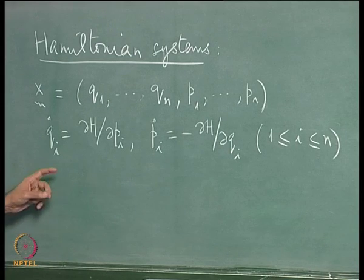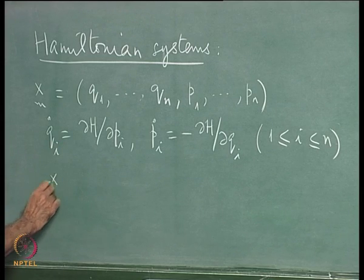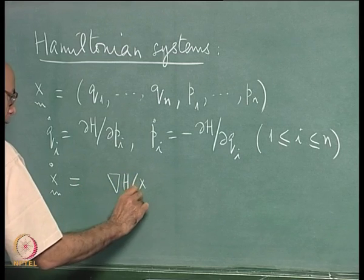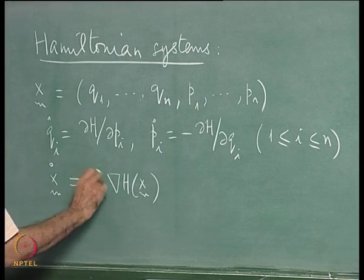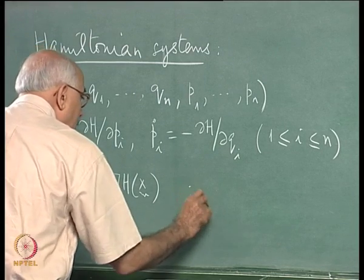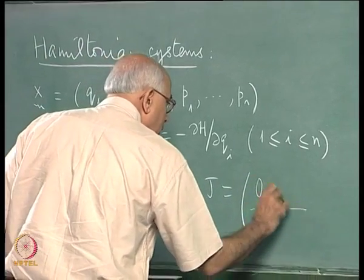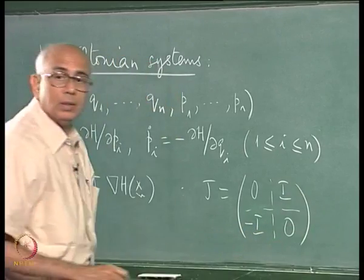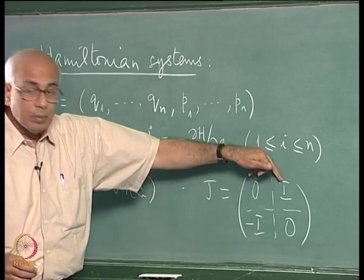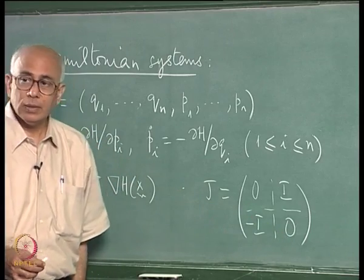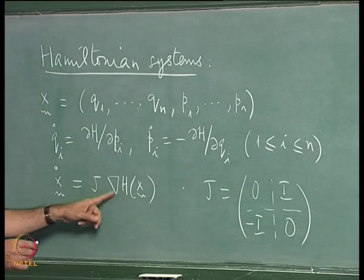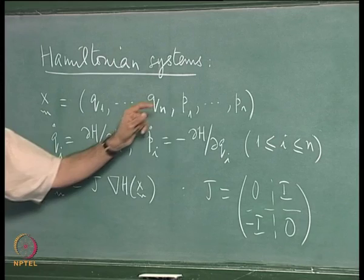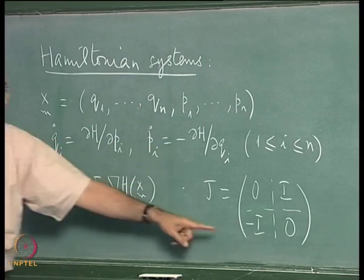The entire vector field governing the time evolution of the phase space point x is given by the gradient of the Hamiltonian multiplied by a matrix J. J is a 2n×2n matrix with zero in the first n×n block, the unit matrix in the upper right, minus the unit matrix in the lower left, and zero in the lower right. This J ensures that the rate of change of the first n components depends on derivatives with respect to the remaining n and vice versa, with the appropriate minus sign.